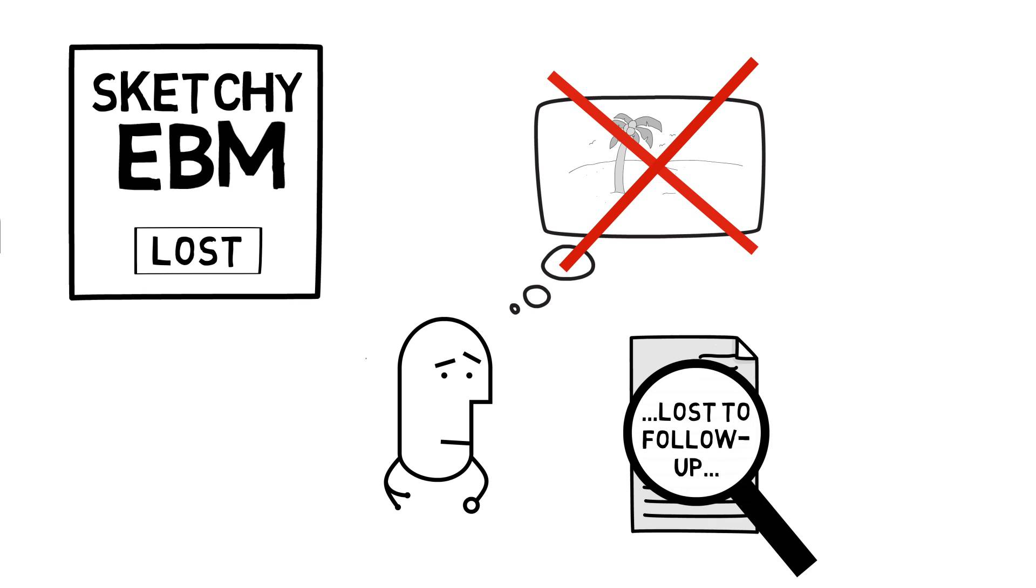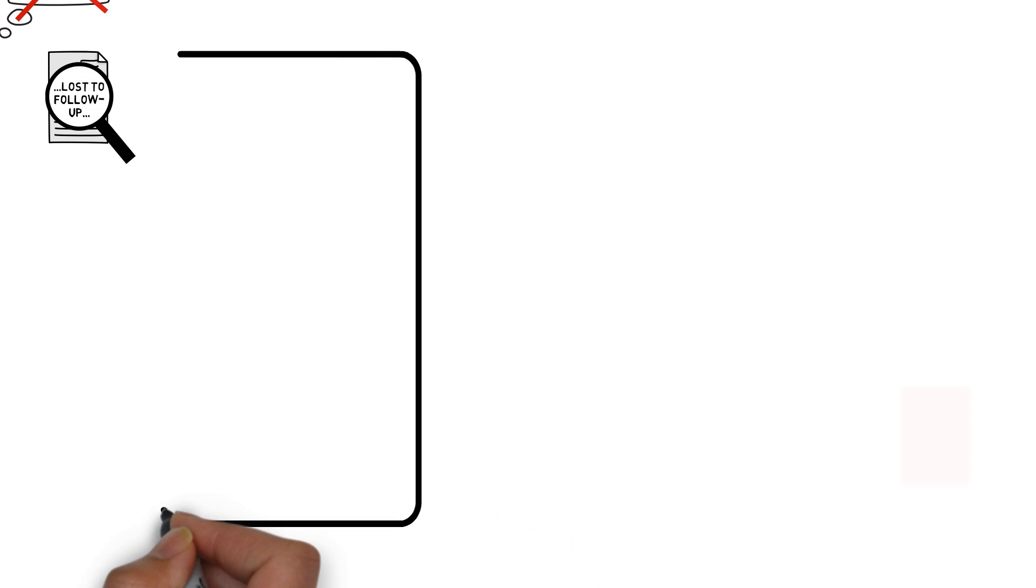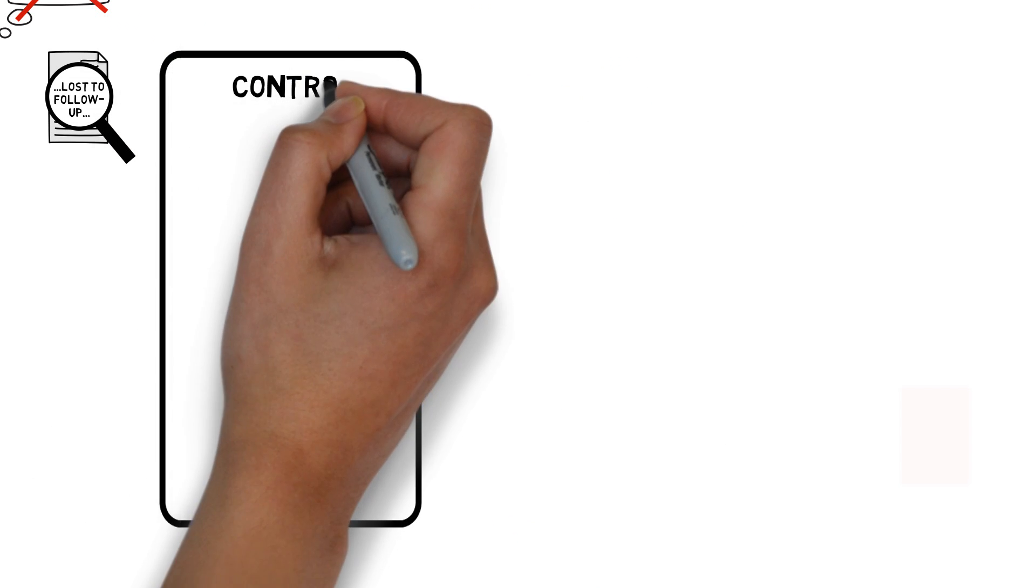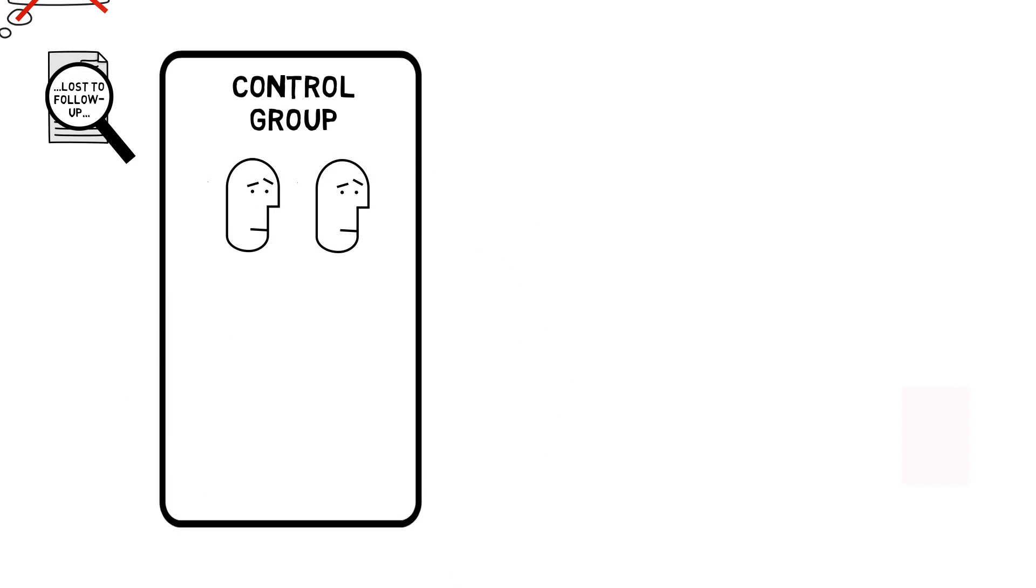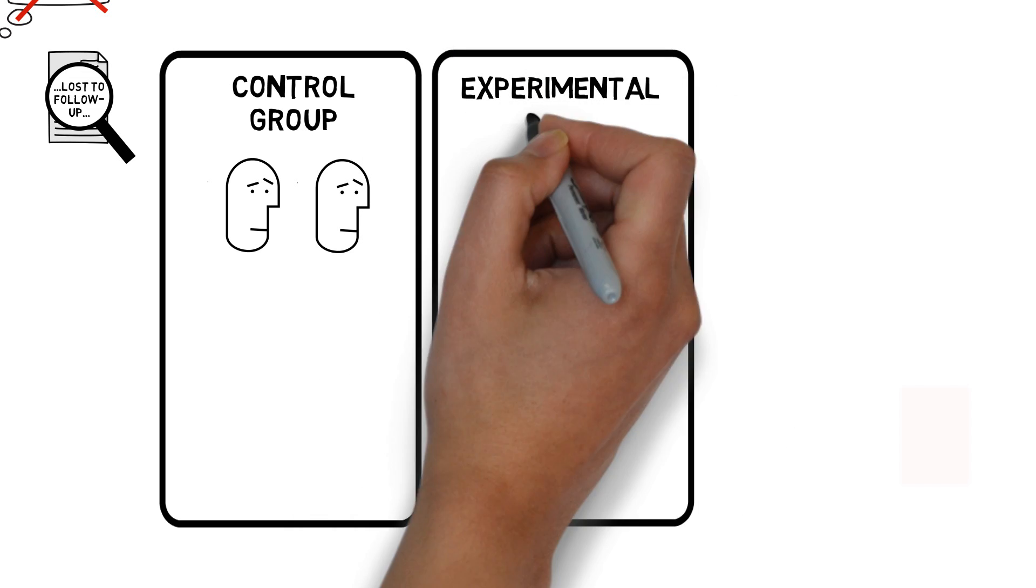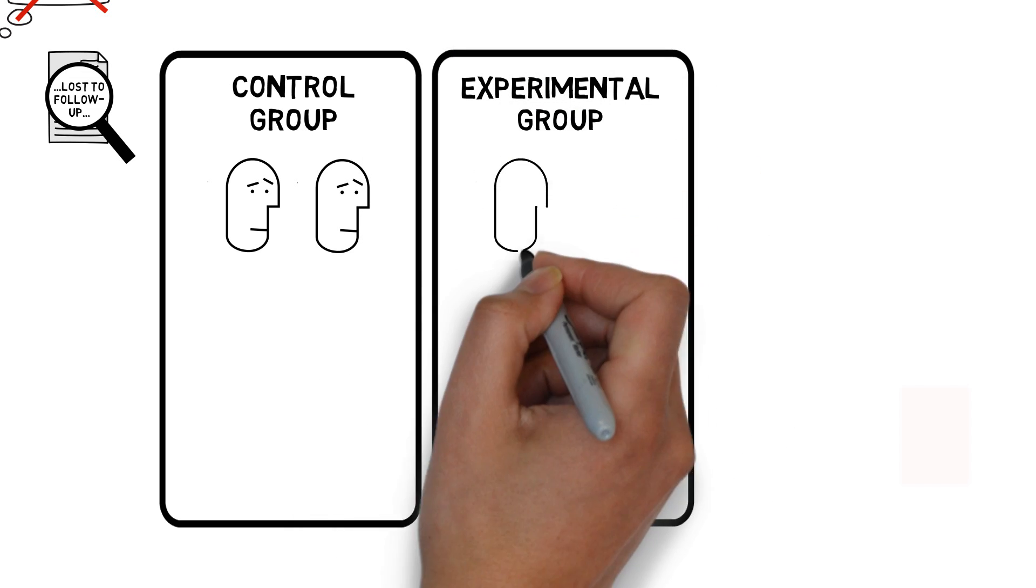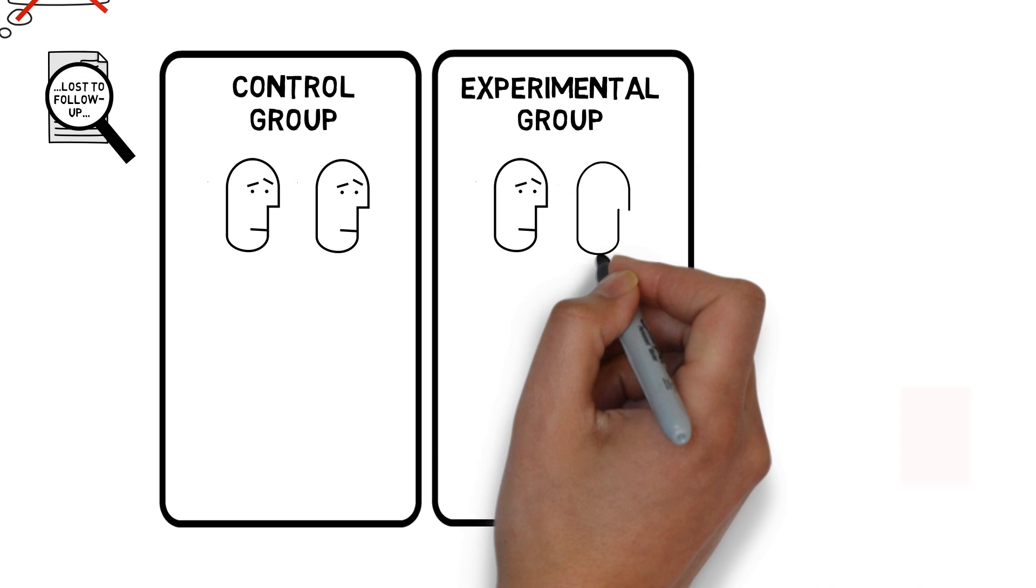Because I think it's important for us to really understand the impact of patients being lost to follow-up, I want to go through a simple example. Now, this is obviously a fictitious study with a ridiculously low number of participants. The overall N of this study is 4, with two participants in the control group and two participants in the experimental group.